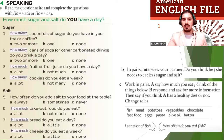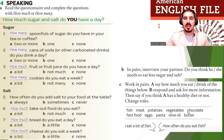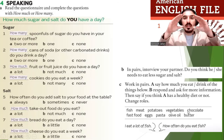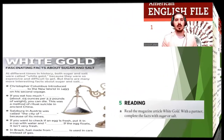In working pairs: A says how much they eat or drink of the items below. B responds and asks for more information. For example: How much fish do you eat? I eat a lot of fish. How often do you eat fish? Twice a week. Use the items and talk.